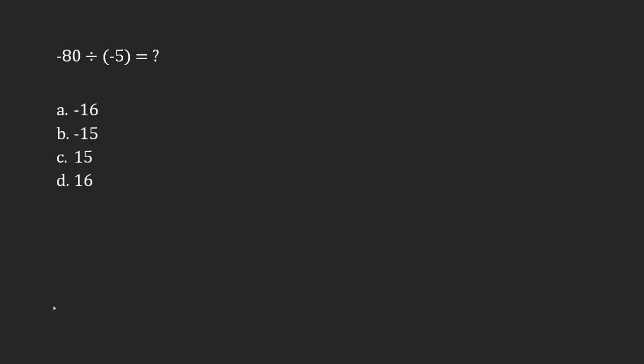Negative 80 divided by negative 5. This gives me negative 80 over negative 5. I can think about division as just being a fraction. Negative 80 over negative 5 is going to end up being positive 16, but there's a number of ways that I can get to that.